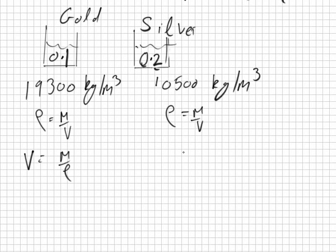So volume would equal mass over density. So how big is our gold supply? It is 0.1 over 19,300. So we have a small amount of gold. 5.18 micrometers cubed.